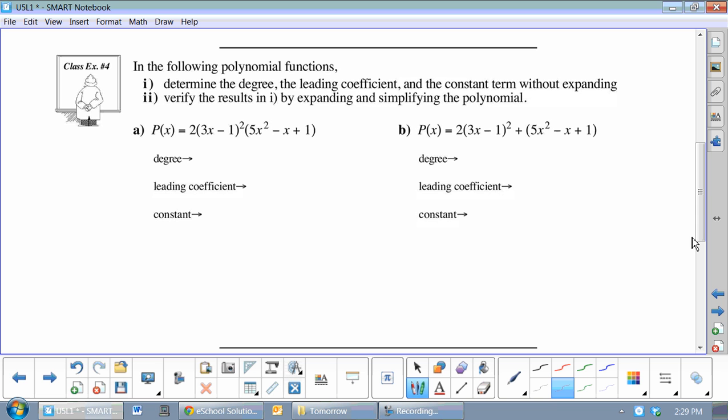Now, these are even more difficult yet. Now, this one here, we can be kind of creative instead of doing all the work. Because if you do all the work, you get 90x to the 4, minus 78x cubed, plus 40x, minus 14x, plus 2. Now, if you look at this, you're thinking, well, that's easy. Degree's 4, leading coefficient 90. But let's see if we can do it again without going through all that work.